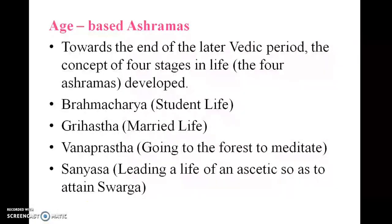Towards the end of the late Vedic period, there were four stages in life called Ashramas. The first is Brahmacharya — student life. The second is Grihastha — married life. The third is Vanaprastha — going to the forest to meditate. The fourth is Sanyasa — leading the life of an ascetic to attain Swarga. These are the four different stages of life.